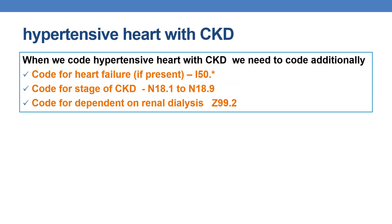Coming to codes for hypertensive heart with CKD — whenever we code hypertensive heart with CKD, you need to code additionally. First, check whether the patient has heart failure. If the patient has heart failure, additionally code heart failure under the I-50 series. The second code should be the code for the stage of CKD, given under subcategory N18.1 to N18.9. Additionally, if the patient has end-stage renal disease and is on renal dialysis, you need to code Z99.2 for dependence on renal dialysis. So for a patient with hypertensive heart with CKD, a minimum of three codes are required, and sometimes four codes are essential if the patient is on renal dialysis.